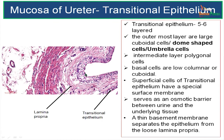Now let us look at some of the details of the transitional epithelium. When the ureter is empty, the transitional epithelium is 5 to 6 layered. The cells of the topmost layer are called dome-shaped cells or umbrella cells.